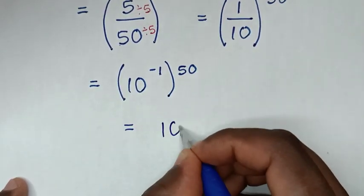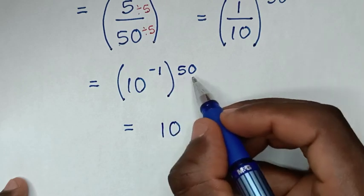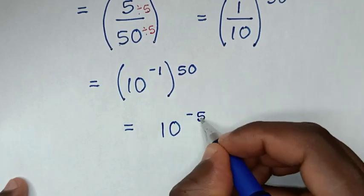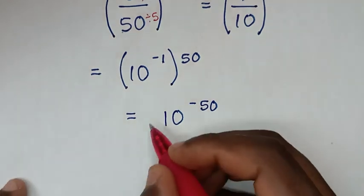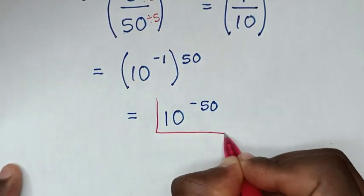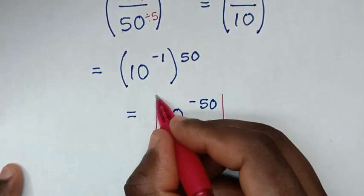Then in the next step it will be equal to 10 to the power of negative 50. Therefore, this is our final answer: 10 to the power of negative 50.